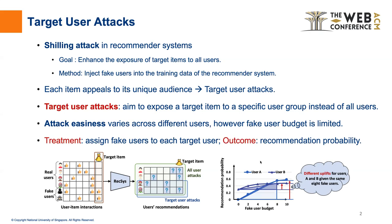In causal language, the treatment is the assignment of the fake user budget to each target user, and the outcome is the recommendation probability of the target item to the target user. The varying attack easiness can be explained by the different uplift of the recommendation probability given the same treatment, i.e., the same fake user budget.